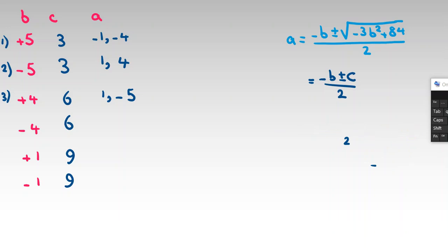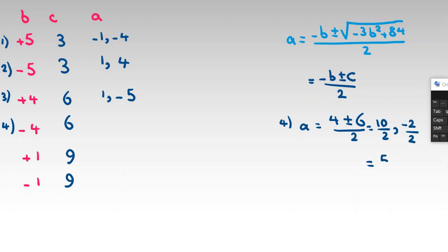Case 4: b = negative 4, c = 6. Then a = (4 ± 6) / 2. That gives (4 + 6) / 2 = 5, and (4 minus 6) / 2 = negative 1. So a = 5 or negative 1.